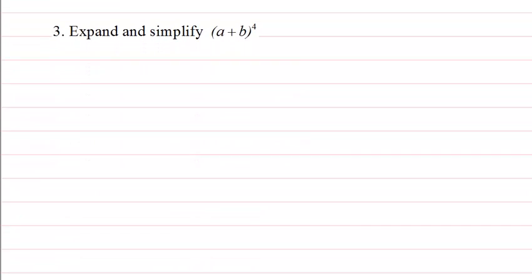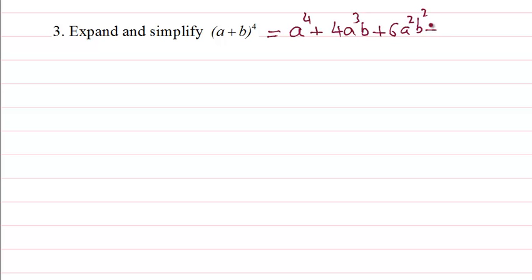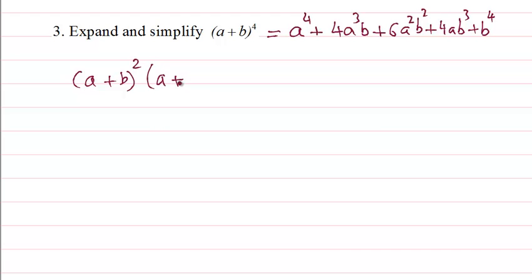Now example 3 — again, this is just a formula you can learn. For (a + b)⁴: a⁴, then 4a³b, then 6a²b², then 4ab³, then b⁴. We can also derive this by writing (a + b)⁴ as (a + b)² · (a + b)², and since we know the formula for each, that's (a² + 2ab + b²) × (a² + 2ab + b²).